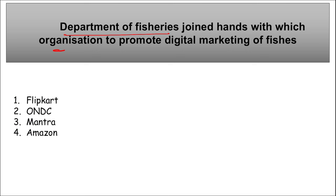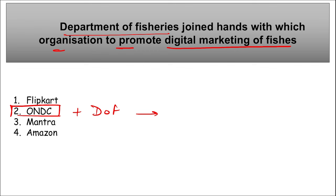The Department of Fisheries joined hands with ONDC — Open Network for Digital Commerce — to promote digital marketing of fishes. The aim is to help fishermen, fish farmers, and entrepreneurs in the fishery sector buy and sell their products through an e-marketplace. This makes it easier for businesses to sell and for consumers to buy fish products online.